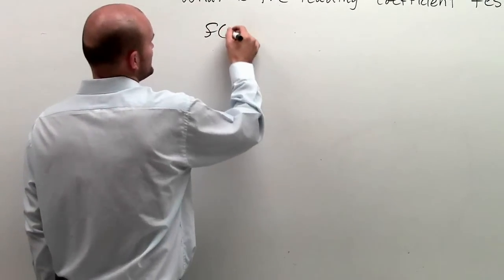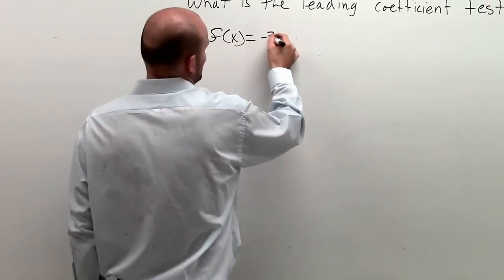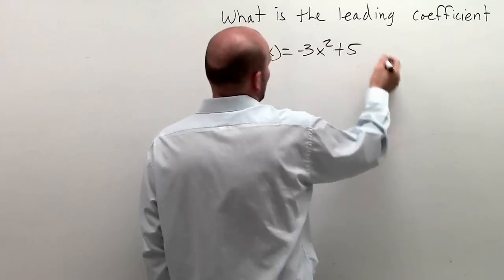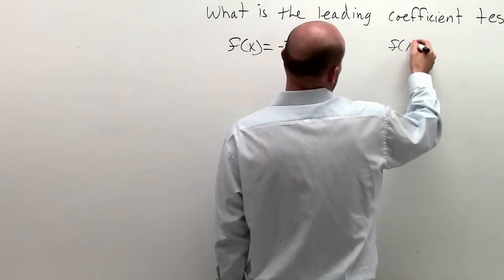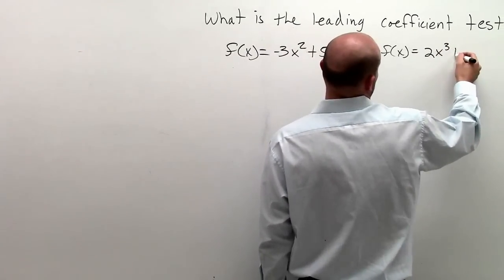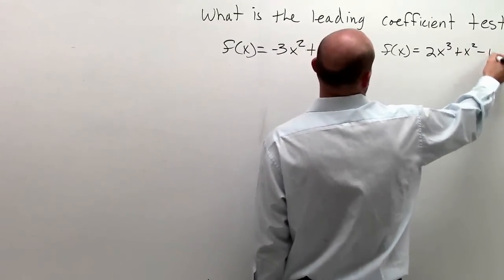So let's say we have two functions. f of x equals negative 3x squared plus 5. And then we have another function, f of x equals 2x cubed plus x squared minus 1.